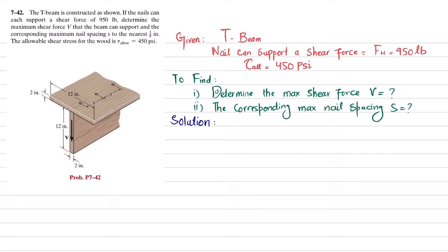So let's start with the solution. We know that allowable shearing stress is equal to V times Q_max divided by I times t. We do not have V, Q_max, I, or t. So first we will find these values.